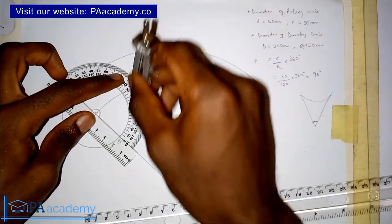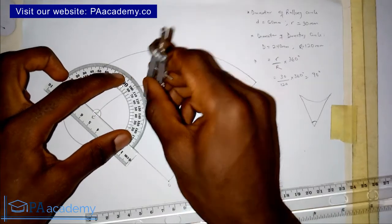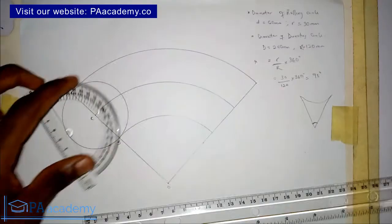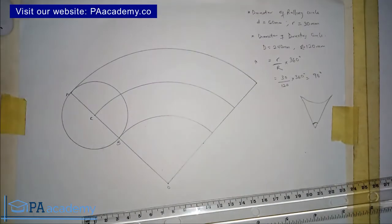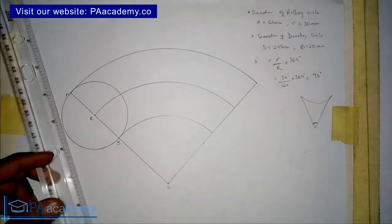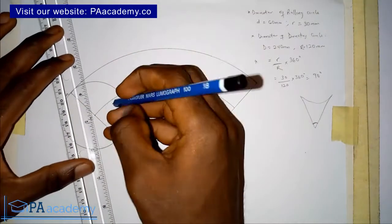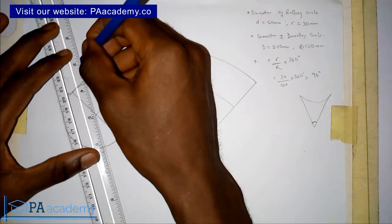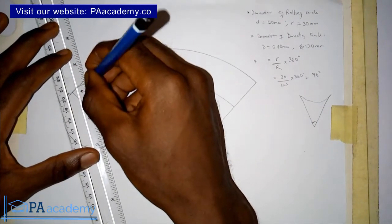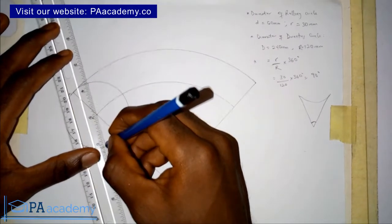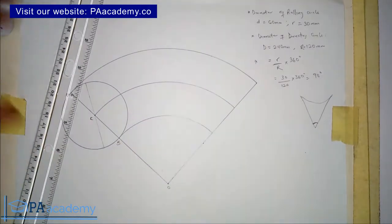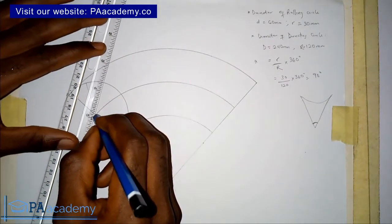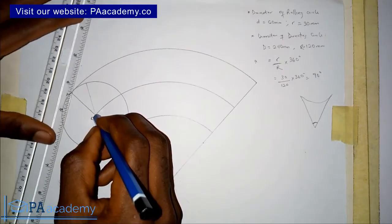Mark points at 90, 120, and 150 degrees. At those points, draw a line through the center to the other side.